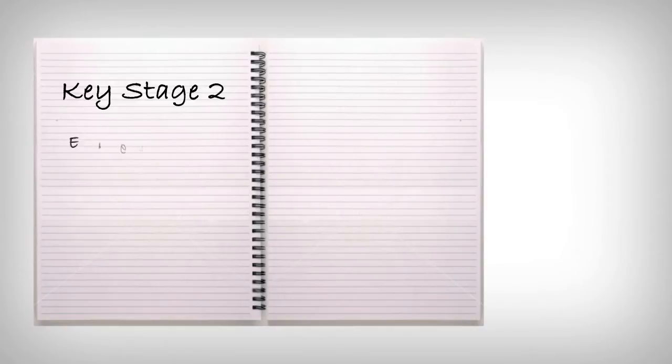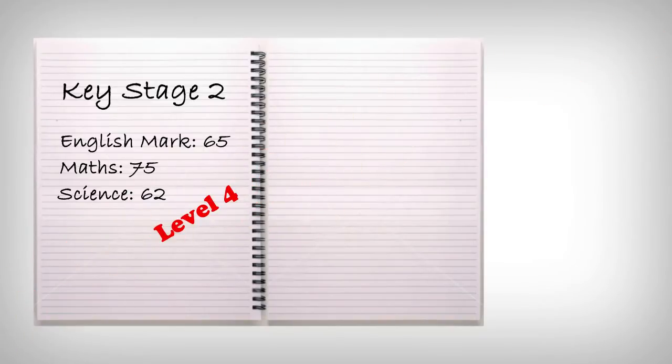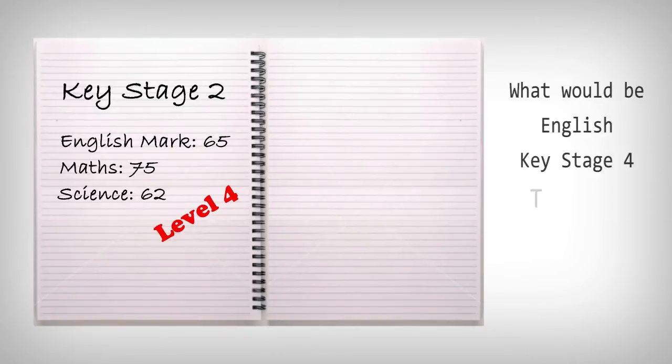If your pupil's Key Stage 2 English mark is 65, which is Level 4, their Maths is 75, Level 4, and Science is 62, also Level 4, what would be the English Key Stage 4 target to achieve a thousand value added for this pupil?